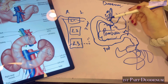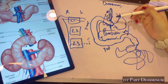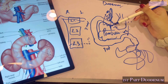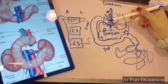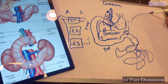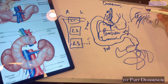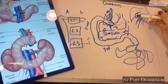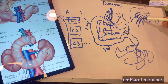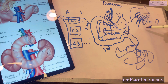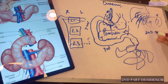An important clinical correlation: the first part of the duodenum is the most common site for peptic ulcers, because acidic contents from the stomach first enter here. Since the first part is anteriorly related to the liver and gallbladder, inflammation from an ulcer can cause adhesion and ulceration into those structures. If the ulcer is posterior, it may perforate and rupture the gastroduodenal artery, resulting in severe hemorrhage.